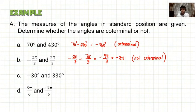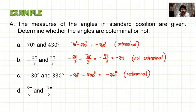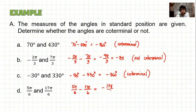Letter C: negative 30 degrees minus 330 degrees equals negative 360 degrees, which is a multiple of 360 — so these are coterminal. Letter D: 5π/6 minus 17π/6 equals negative 12π/6, which equals negative 2π. Since negative 2π is a multiple of 2π, these angles are also coterminal.